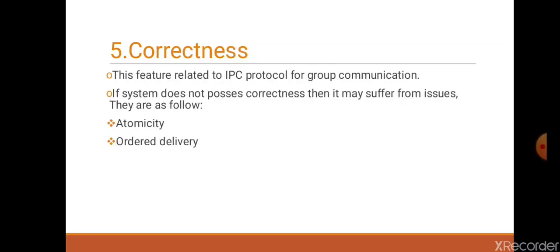There are mainly two issues: atomicity and ordered delivery. What is atomicity? Atomicity ensures that every message sent to a group of receivers will be delivered to either all of them or none of them. And second is ordered delivery. This ensures that the messages arrive at all receivers in a correct order by the application.